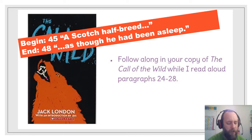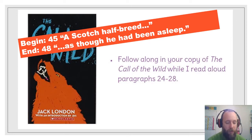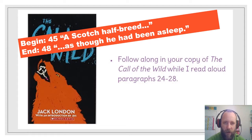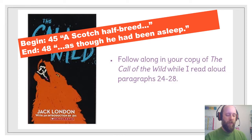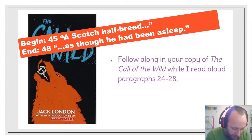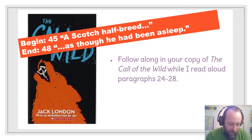He was all but naked — except for a tiny, ragged, fire-scorched animal skin hanging partway down his back. But on his body there was much hair. In some places, across the chest and shoulders and down the outside of the arms and thighs, it was matted into almost a thick fur. A practically naked guy with a bunch of fur on his body. He did not stand erect, but with trunk inclined forward from the hips, on legs that bent at the knees. About his body there was a peculiar springiness, almost cat-like, and a quick alertness as of someone who lived in perpetual fear of things seen and unseen.